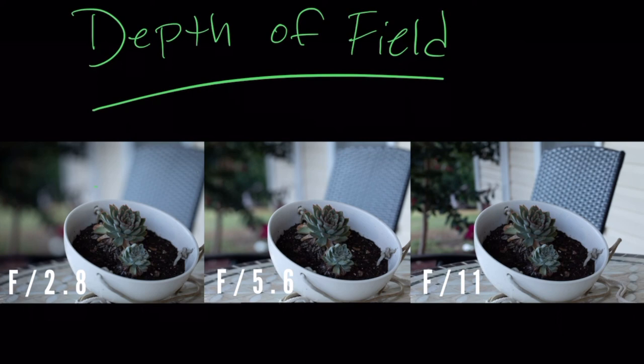At f/2.8 right here, the background is blurry and a little bit of the edge of the bowl is blurry. At f/5.6, our edge of our bowl is getting a little sharper, but back here is still pretty blurry, not as blurry but still a little blurry.